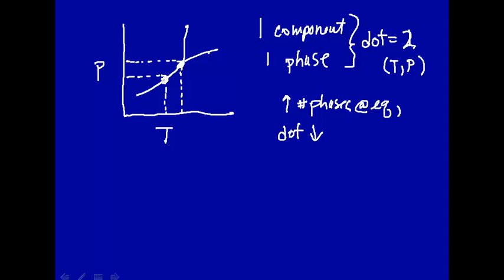If you make two phases, the degrees of freedom will decrease by one. Let's sort of keep a running tab here. So degrees of freedom will equal minus the number of phases. Because each time we add a phase, we decrease the degrees of freedom by one.